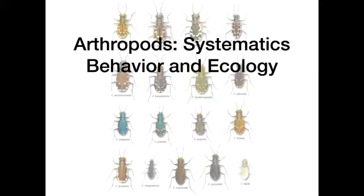Hello and welcome back to Medical and Veterinary Entomology. Today we are going to be looking at the Systematics, Behavior, and Ecology of Arthropods. This is part of Unit 1 and we will be concentrating on the Blatteria, the Thysanoptera, Coleoptera, and Hemiptera. We will be looking at some structure, a lot of taxonomy, how taxonomy is organized in the arthropods, and then we'll briefly look at the different families of arthropods and their roles in medical and veterinary entomology.